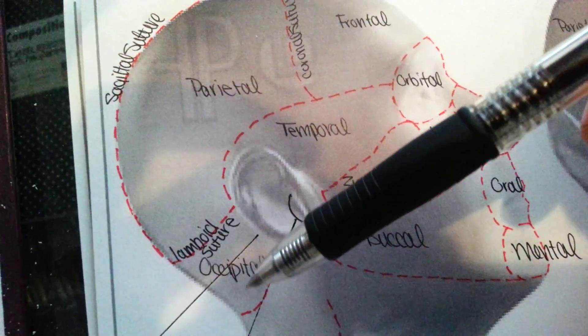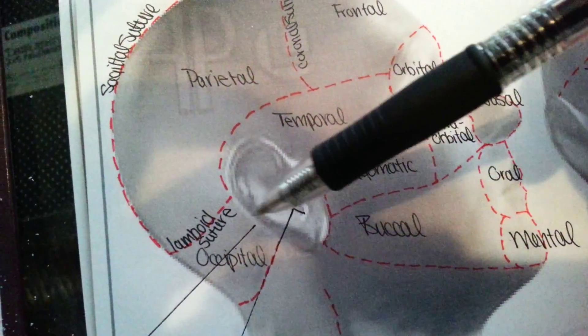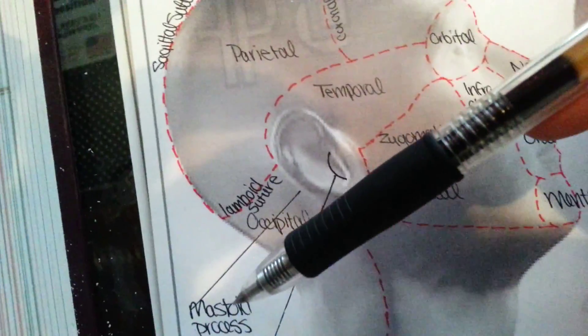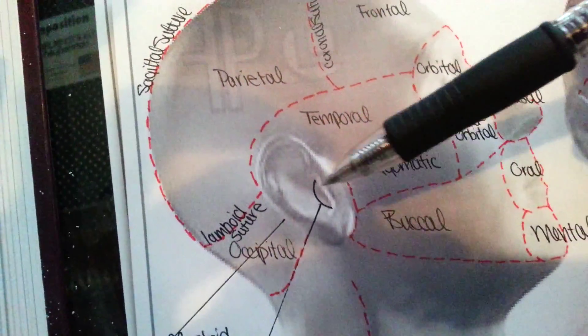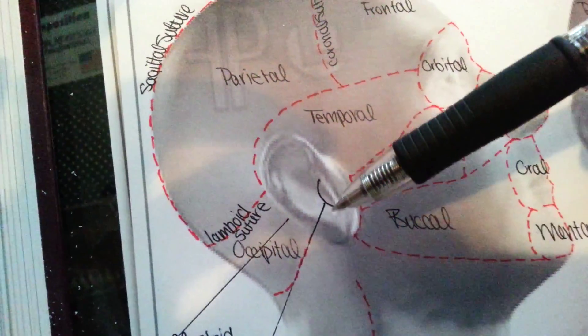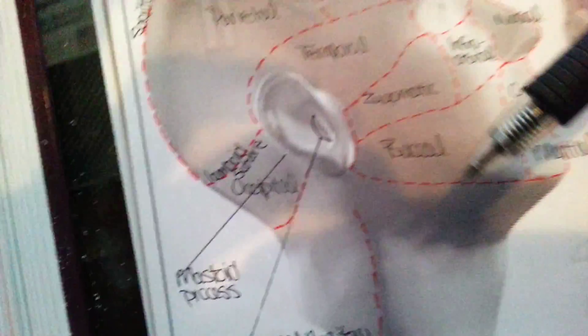Occipital is the back of the head, that lump that you feel. That lump you feel behind your ear is called the mastoid process, and that was interesting. The opening of your ear is actually called the external auditory meatus.